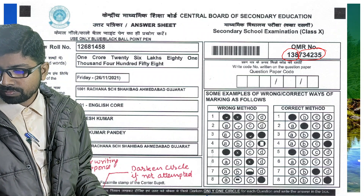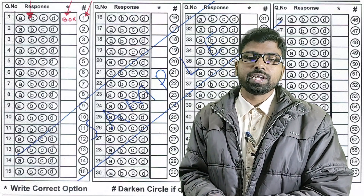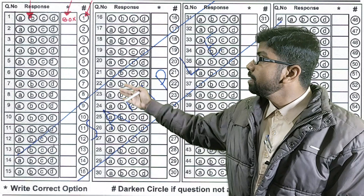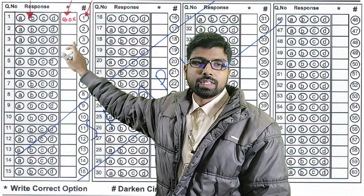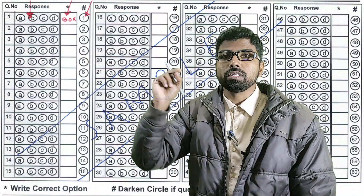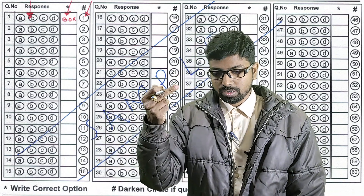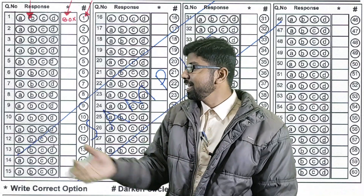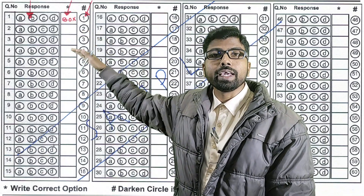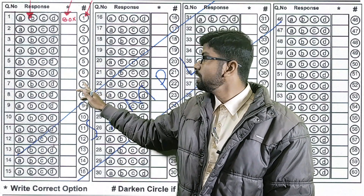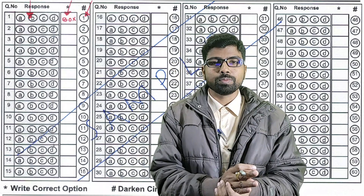Now an important instruction for invigilators: while students are answering, they must darken — meaning bubble or encircle — the correct option on the OMR sheet, and also write the option letter in the box provided. If they are skipping a question, they must mark that box accordingly. Invigilators, meaning assistant superintendents, must guide students in the classroom on how to attempt the OMR correctly — not by telling answers, but by guiding the process.